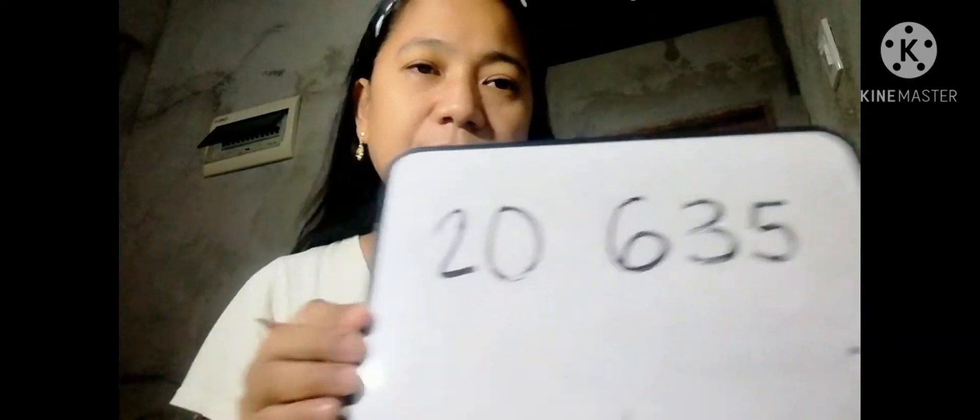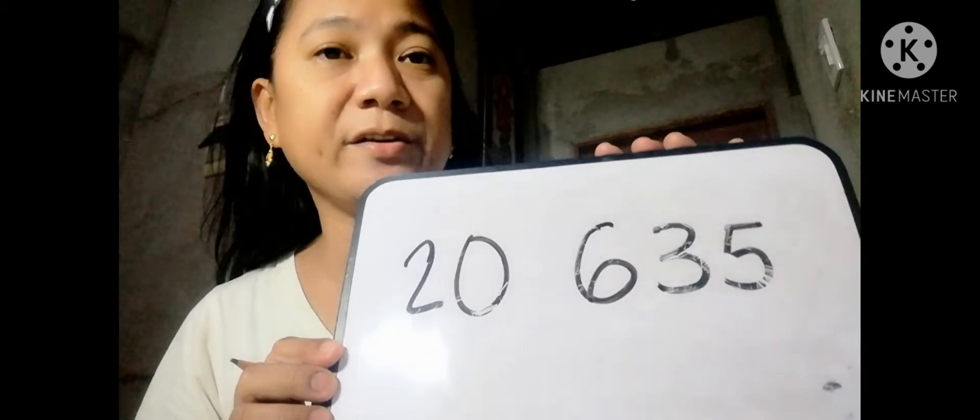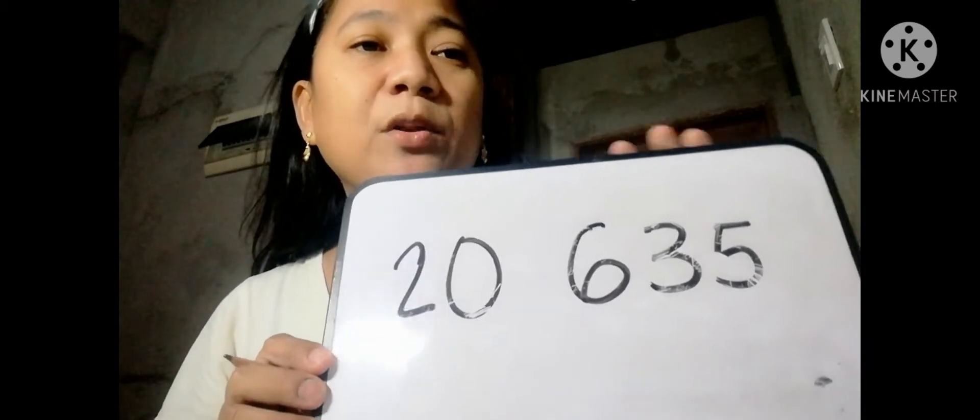We visualize numbers by using a representation. In this lesson, we use number disks to represent a number. For example, we have a total number of 20,635 people inside a basketball stadium. Can you imagine how big that number is? So this is the 20,635 persons inside the basketball stadium.